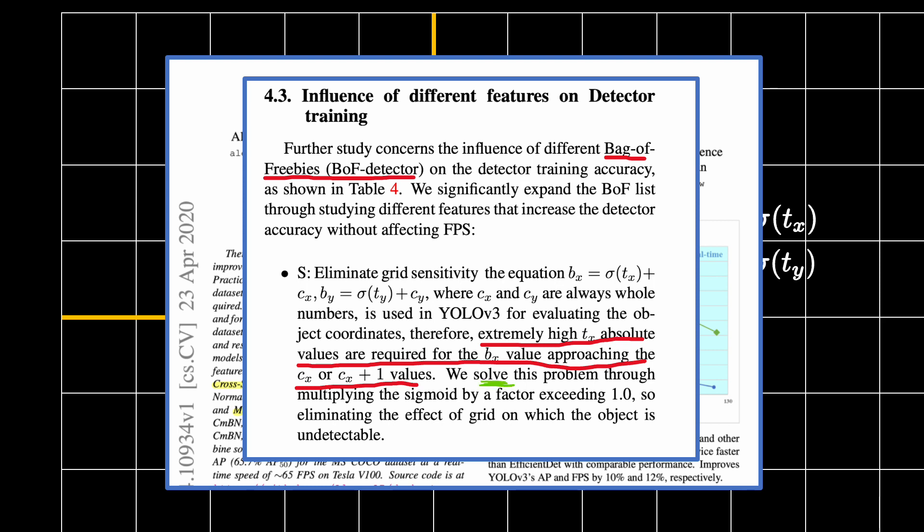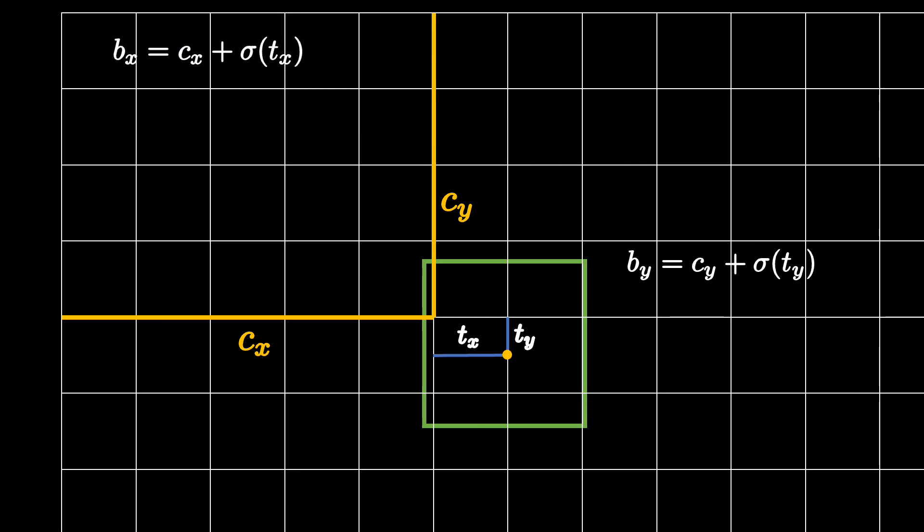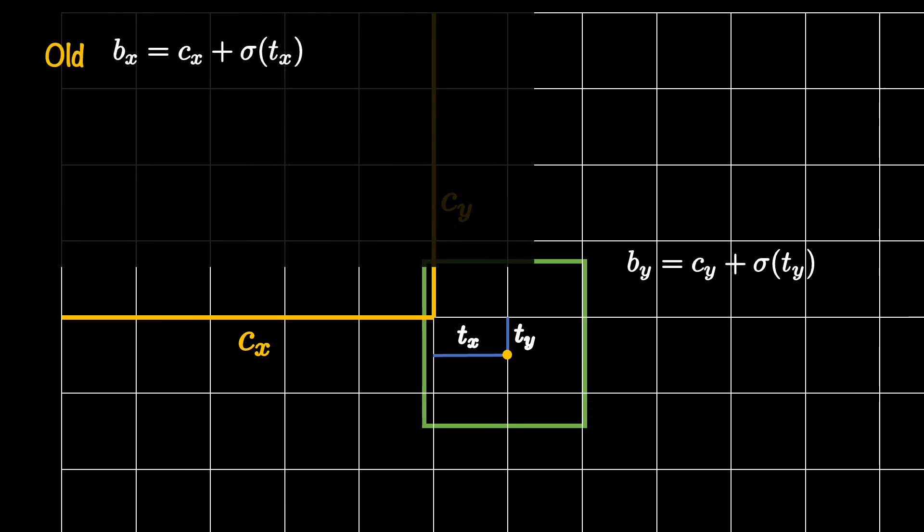The solution they propose is to multiply the result of the sigmoid function with a hyperparameter greater than 1.0. But this paragraph is not very clear. So let me provide some visual aids to explain it. This is our current formulation for the BX. You should understand it by now and if my recap was not sufficient, then please do watch the bounding box prediction tutorial.